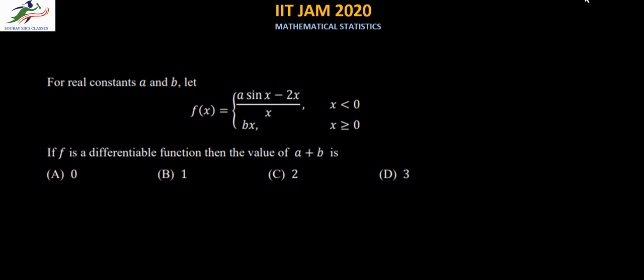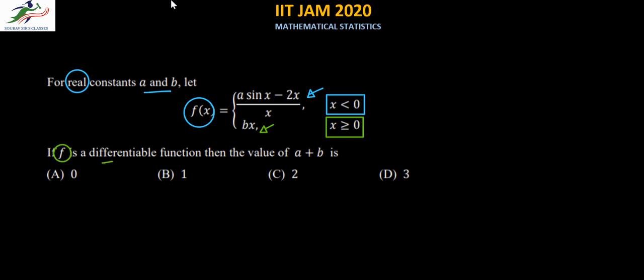Hello and welcome to Sorofs's classes. Today we are discussing the IIT JAM 2020 mathematical statistics paper. This question says: for real constants a and b, there is a function f(x) defined by (a·sin(x) − 2x)/x for x less than 0, and bx for x greater than or equal to 0. We are told f is differentiable and asked to find the value of a plus b.